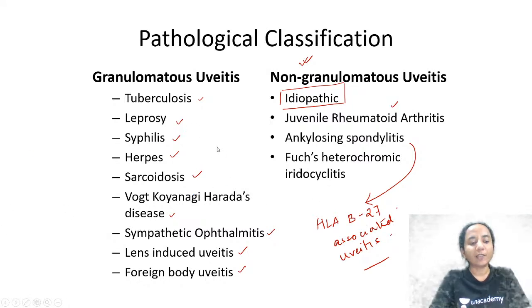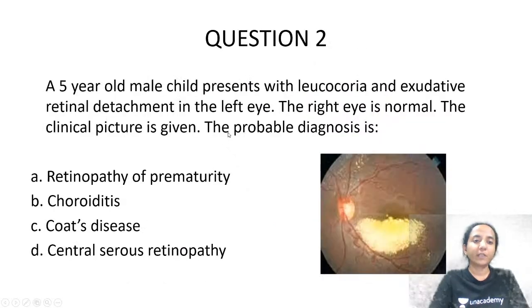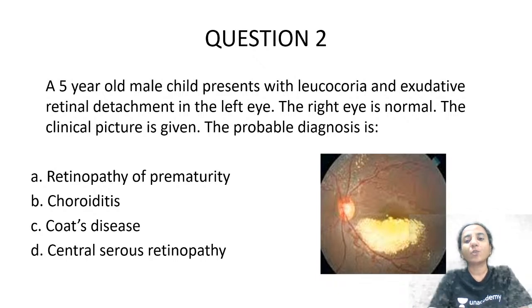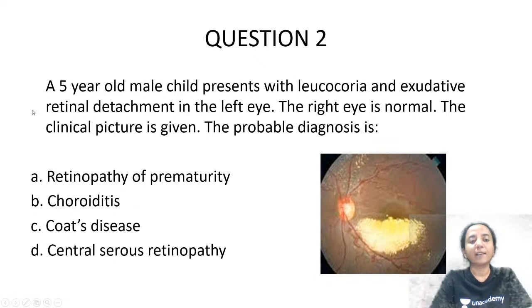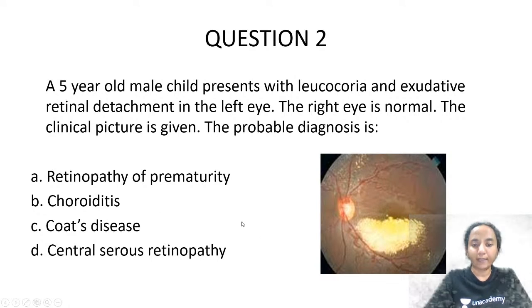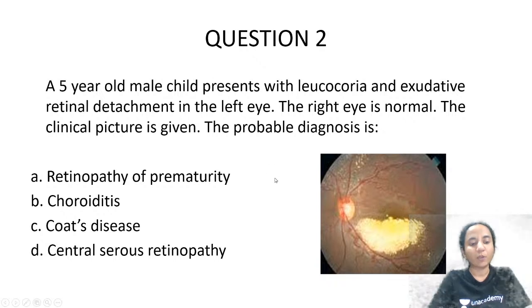Let's go to the next question. A 5-year-old male child presents with leukocoria — which means white pupillary reflex — and an exudative retinal detachment in the left eye. The right eye is normal. What is the diagnosis? The options are retinopathy of prematurity, choroiditis, Coats disease, or CSCR.